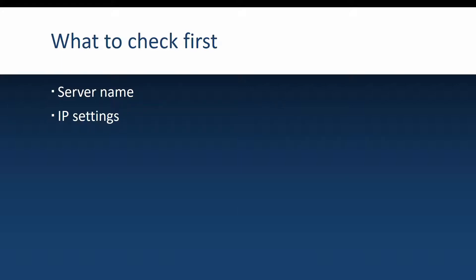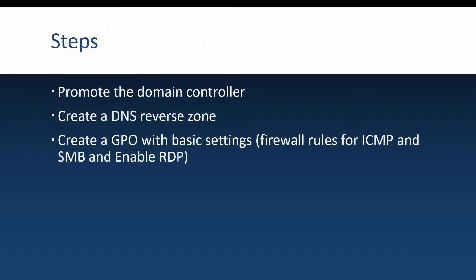Let's see how we can promote a Windows Server 2022 server. Before promoting, I usually like to make sure that the server name is set correctly, and also the IP settings are set correctly. This is because it's much nicer to have the correct name and IP before making a server a domain controller. If those two are okay, then you can go ahead with the steps to promote the server to a domain controller. In this video, I will also show you how to create a DNS reverse zone, so we also have a mapping from IP addresses to server names. And I will also show you how to create a basic group policy with a couple of firewall settings and enabling of remote desktop.